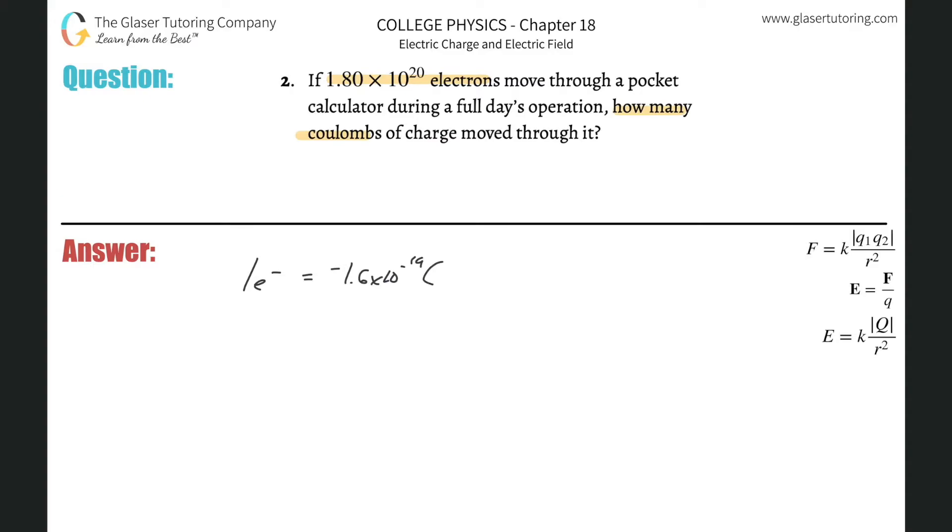So basically if I know the number of electrons, I can simply find the coulombs by doing a little conversion. I'll start with the 1.80 times 10 to the 20 electrons, and then multiply that by, we'll have electrons on the bottom. So we will have then for every one electron, there is negative 1.6 times 10 to the negative 19 coulombs of charge.